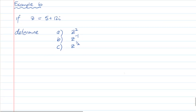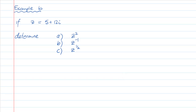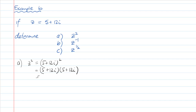We'll finish off this video with Example 6. If z equals 5 plus 12i, determine z squared, z to the negative one, and z to the power of a half. z to the power of a half is the one I really want to get to, because taking a square root is the next step in what we're doing. So let's start with part a: z squared equals 5 plus 12i squared, which is 5 plus 12i times 5 plus 12i. Five times five is 25, plus 60i.